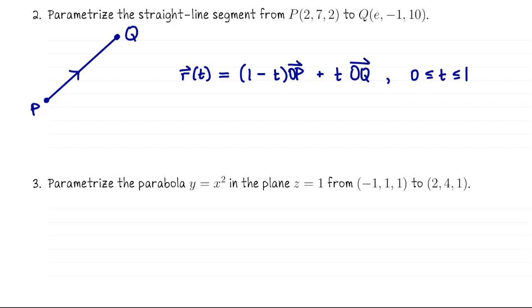When you plug in t equals 0, notice the second part is going to go away because of that 0, and the first part is going to be 1, 1 times op. That's going to send you to this point. When you plug in t equals 1, the first term vanishes and you're left with just oq. That's going to take you to this point.